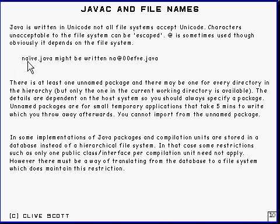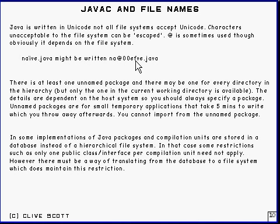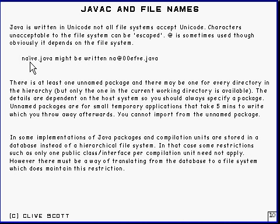So 'Naïve.java' — that's an i with two dots on it — might be written like this: 'na@00ef ve.java', where @00ef is the four hexadecimal characters corresponding to the i with two dots on it.